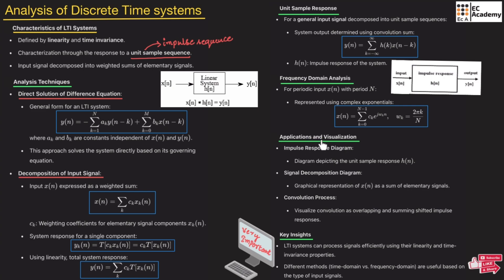Now let us understand the applications and visualization. The impulse response diagram represents the unit sample response H(N), as you can observe in the diagram. Graphically, X(N) can be represented as a sum of elementary impulse signals, which is the decomposition of the signal. We can visualize convolution as overlapping, summing, and shifting impulse responses to get the system output.